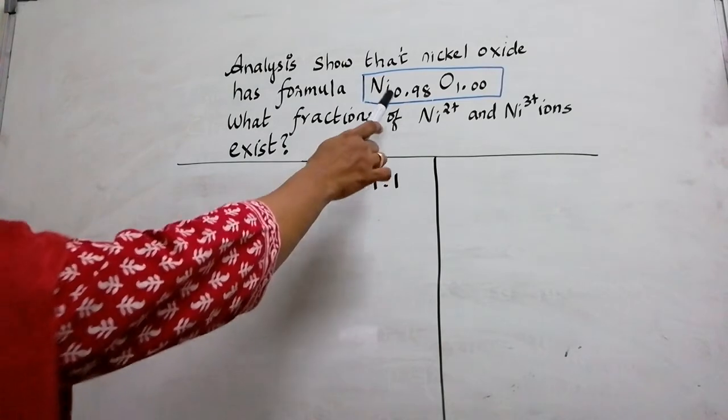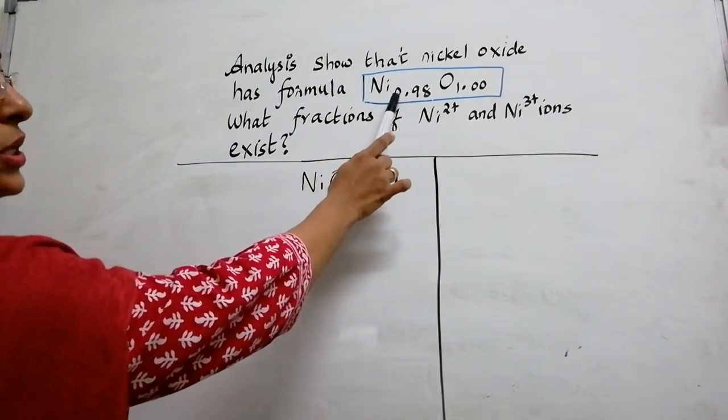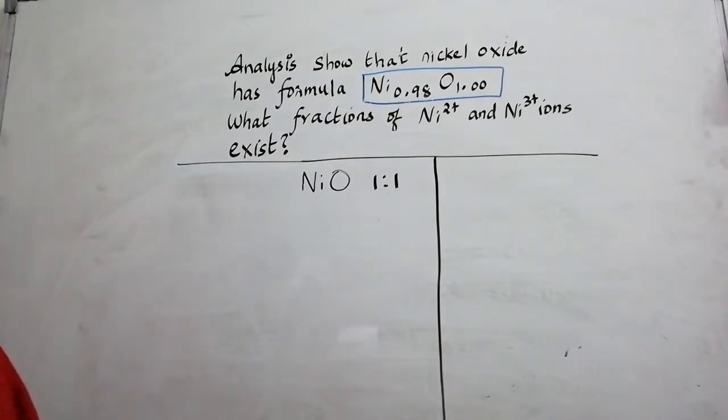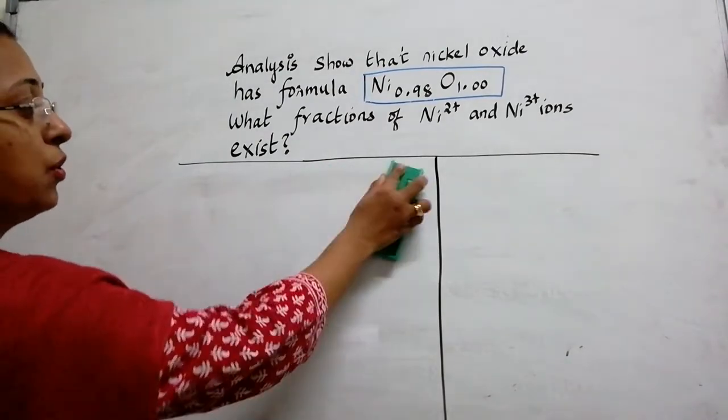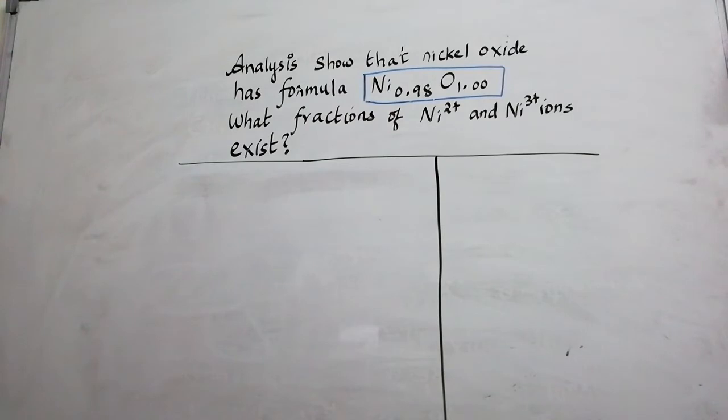But here you find nickel is having less than 1, that is 0.98. So this type of defect we call as metal deficiency defect and the main defect is called non-stoichiometric defect. So it belongs to non-stoichiometric defect and also metal deficiency defect.